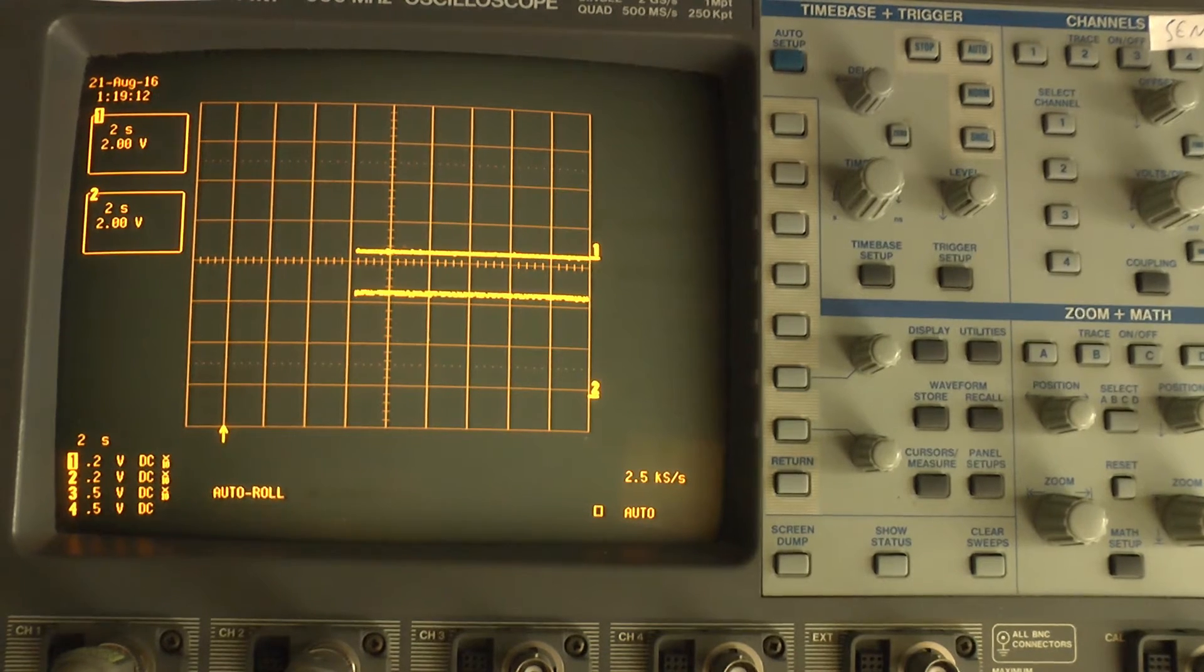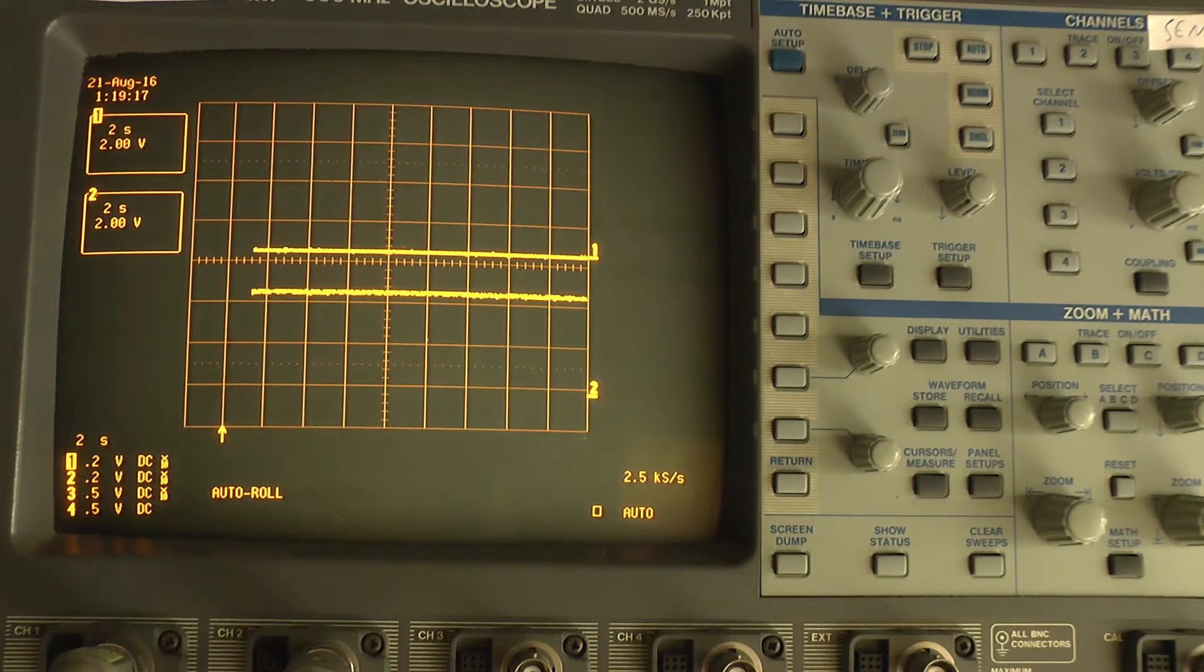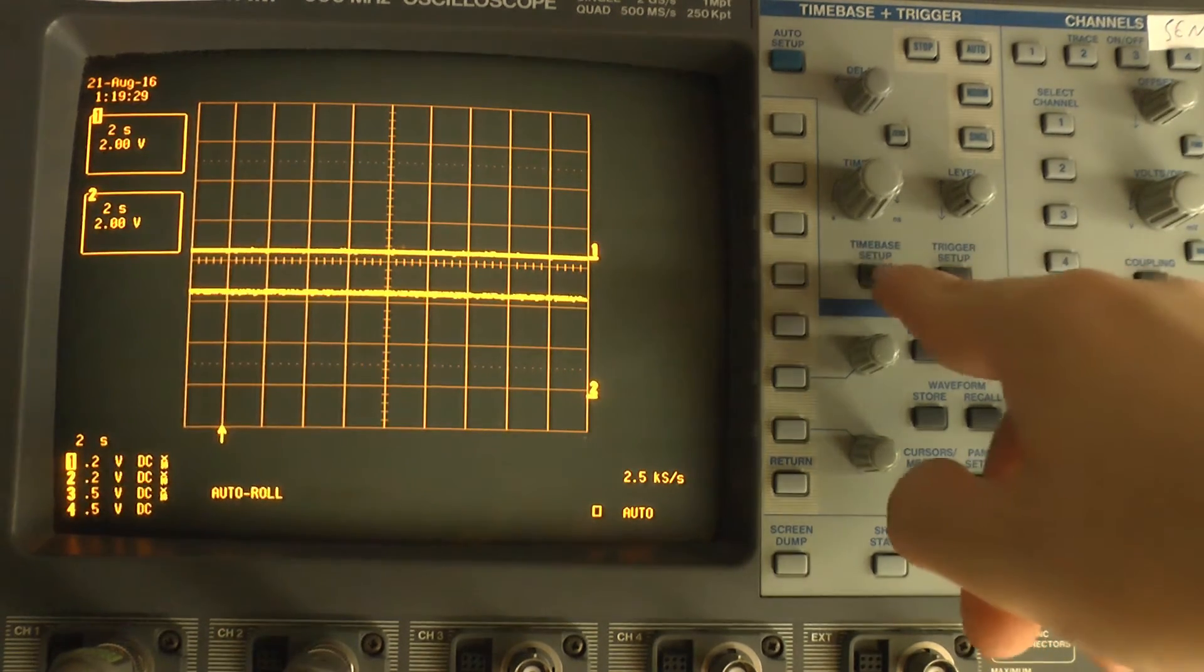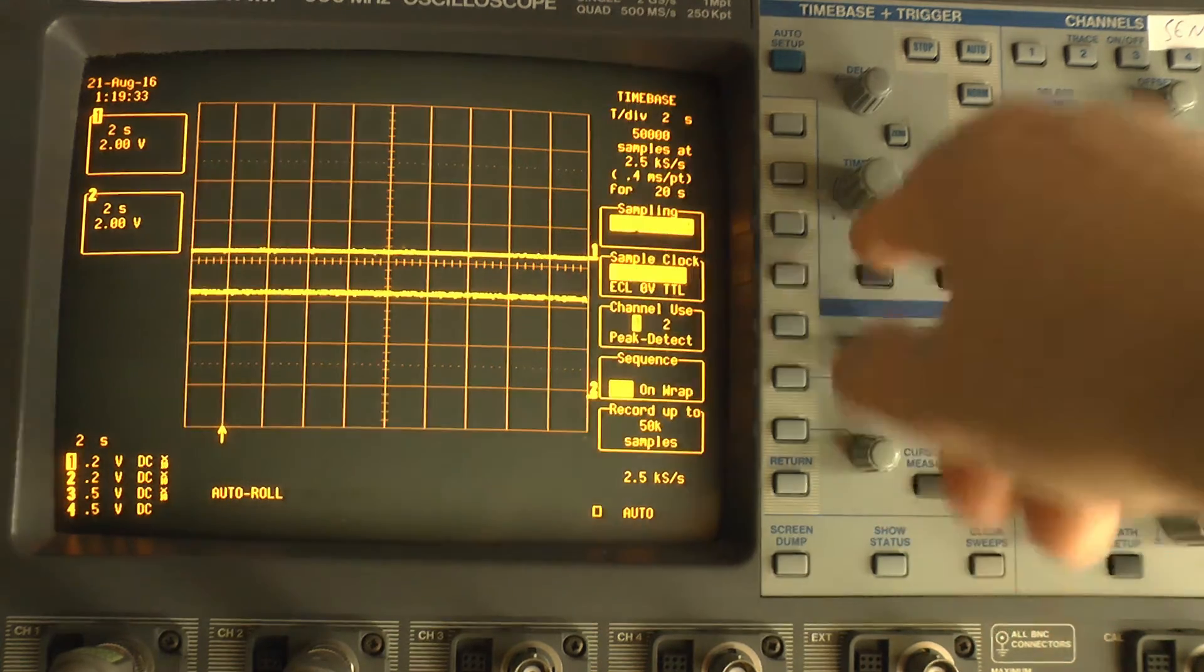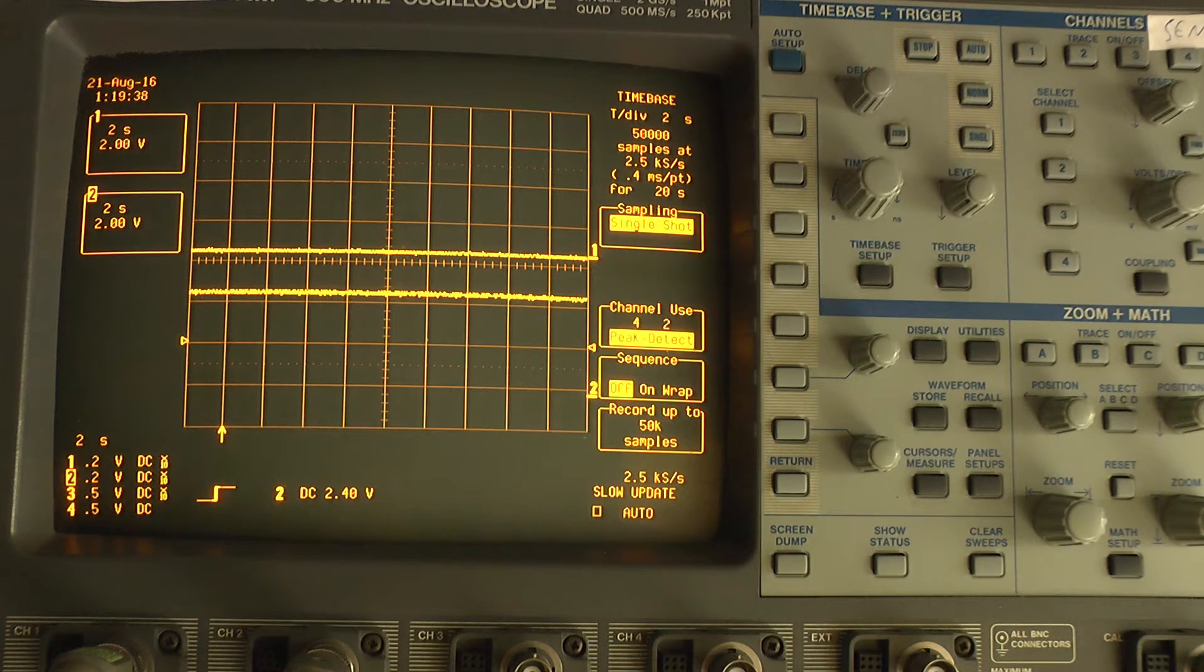As there has been quite a bit of discussion about how to activate peak detect on these LeCroy 9300 series scopes, I am now going to show you the sequence. You see that currently we are in the auto roll mode. So the first thing we do is we press the time base setup button, and we set channel use to peak detect.